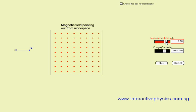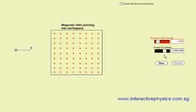We can change the magnitude of the magnetic field. We can change the direction of the magnetic field. We can change the charge carried by the particle and also the sign of the charge.